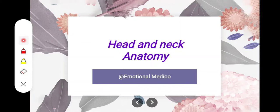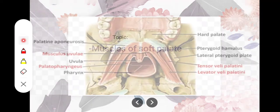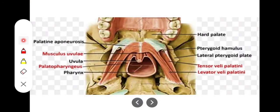In this video we will take a look at the muscles of the soft palate. There are five main muscles associated with the soft palate. They help in the elevation, depression, and tension of the soft palate, and are responsible for closing the oropharyngeal isthmus so that food might not enter the nasal cavity during swallowing.